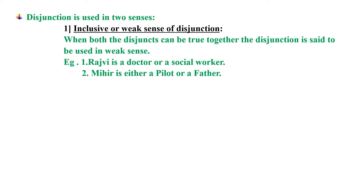Both can be true together. Second example: Mihir is either a pilot or a father. Here also, the word or is used in weak sense because Mihir being a pilot can be true together with him being a father. So when we affirm that he is a pilot, we cannot deny that he is a father — both can be true together. So the disjunction is used in weak sense.